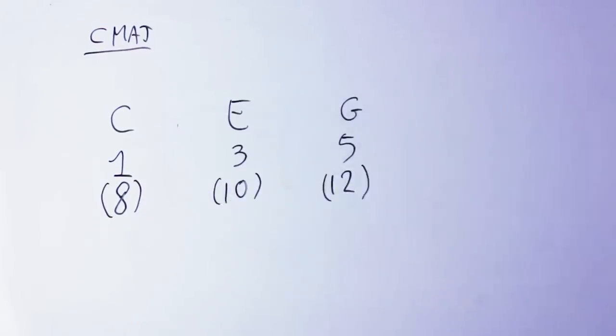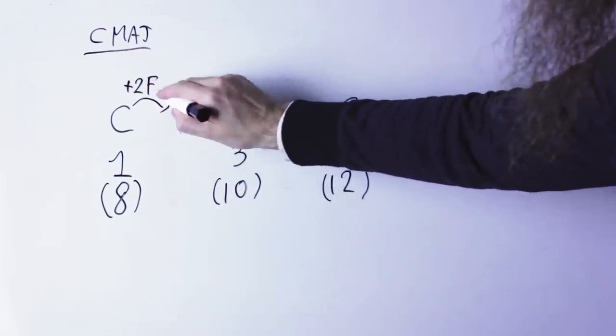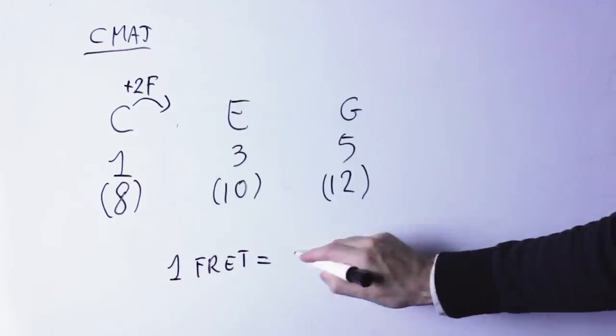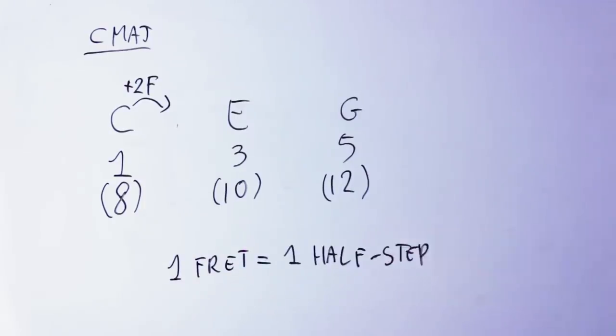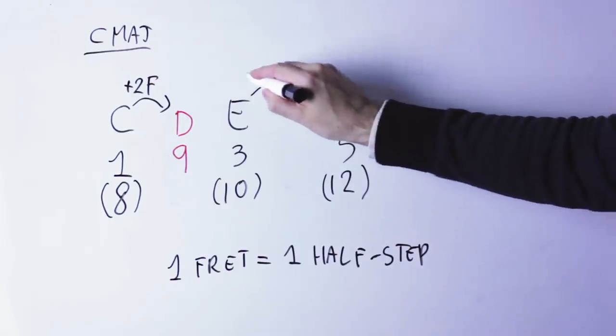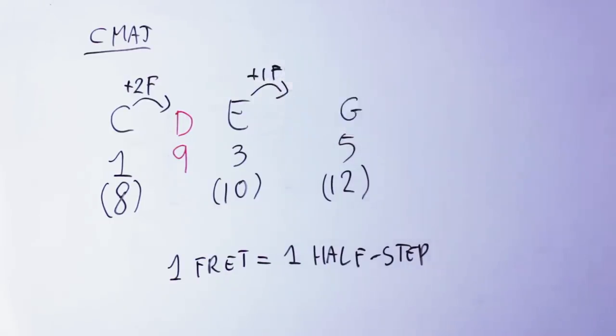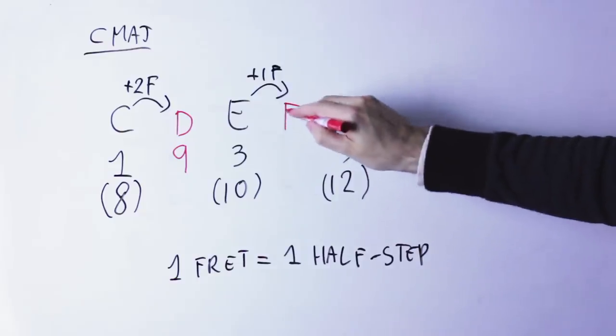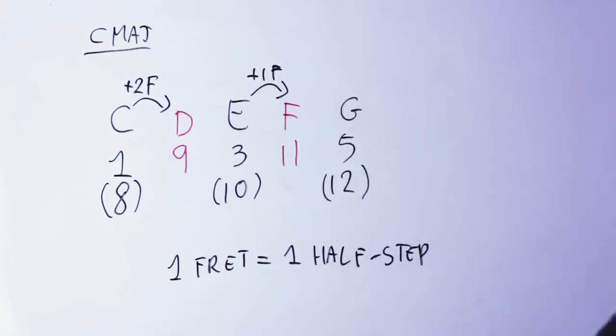Now, if we take the notes that's two frets above the root, we're going to call this note the ninth of the chord, and in this case it's D, two frets above the C. If we take the note who is one fret above the major third, which is F,